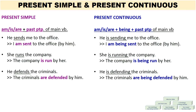Third example: He is defending the criminals. Note that in the active voice we have 'he is.' However, when we switch this to the passive voice, we use 'are' because 'the criminals' is a plural noun. So the sentence reads: The criminals are being defended by him.